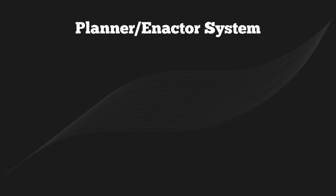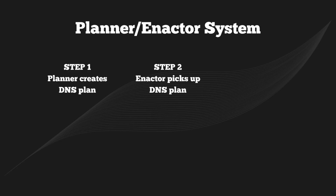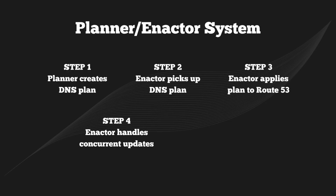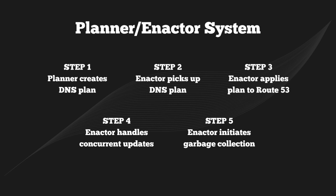The DNS Planner-Enactor process happens in five stages. One: a planner creates a new plan with the DNS records pointing to the correct load balancers. Two: the Enactor picks up the new plan and checks to make sure this plan is newer than the last one it successfully applied. Three: the Enactor applies the DNS records to Route 53 in an all-or-nothing way. Four: concurrent updates between Enactors are handled via conditional checks to ensure there isn't a conflict. Five: once an Enactor applies its plan, it initiates a garbage collection process where it deletes stale leftover records in Route 53.